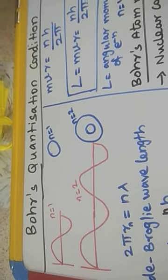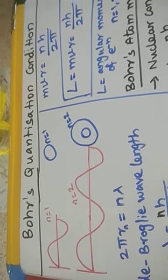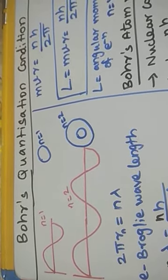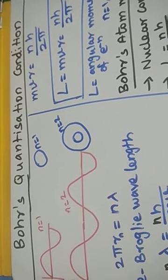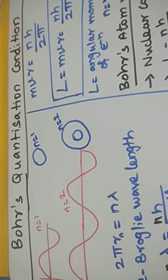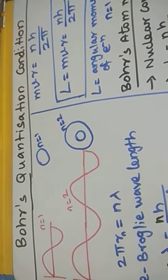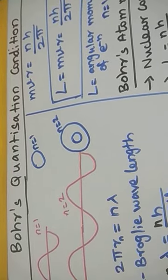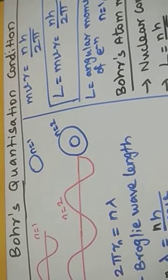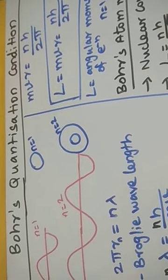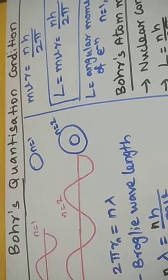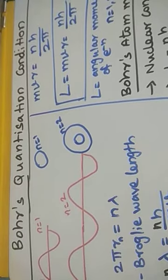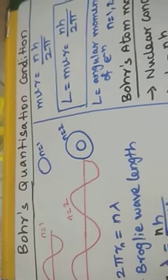After the Rutherford atom model, there are some limitations found. The stability of the atom is not adequately explained by Rutherford, because the revolving electron loses energy. Due to the electrostatic attraction of the nucleus, the electron may fall onto the nucleus — but that does not actually happen. So scientists say that the Rutherford atom model cannot clearly explain the stability of the atom.